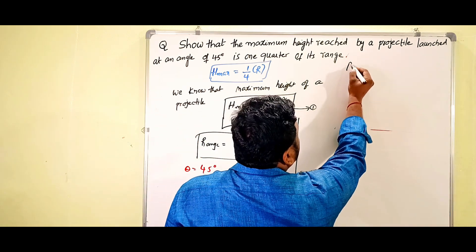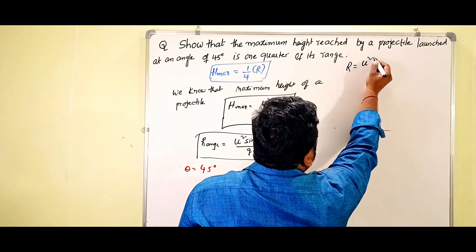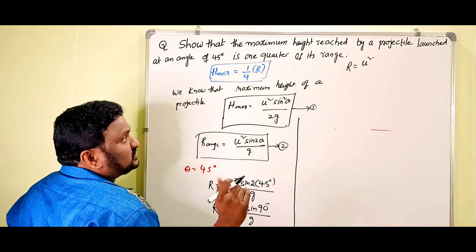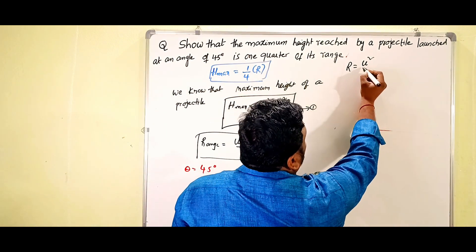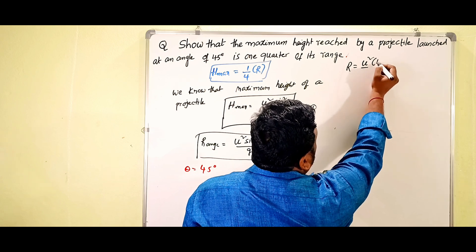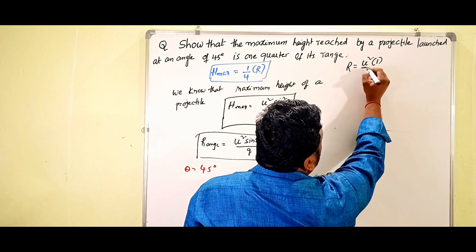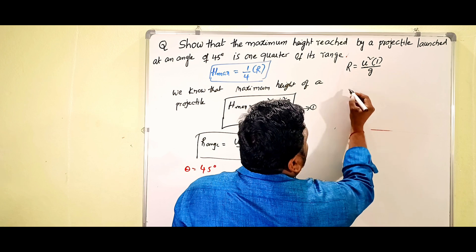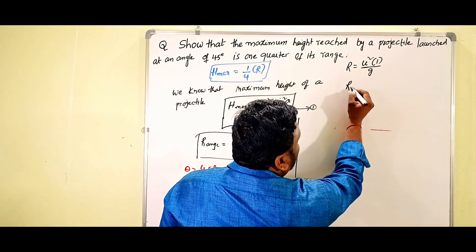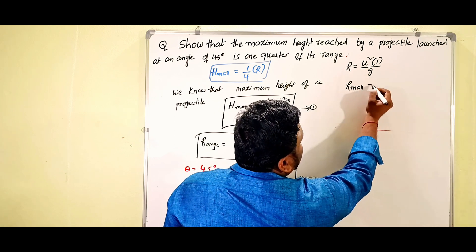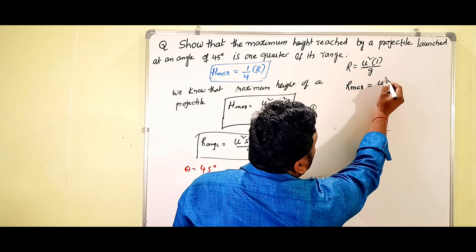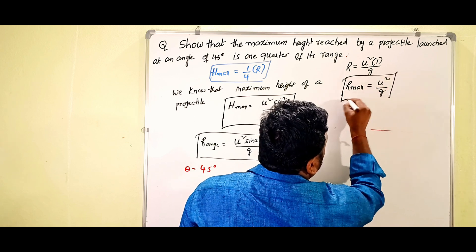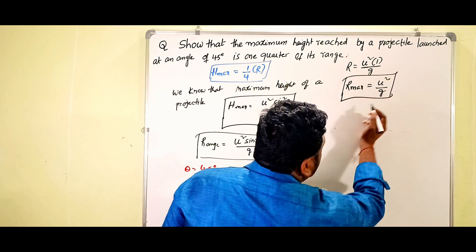Since sin(90°) = 1, we get R = u² × 1 / g, therefore R_maximum = u²/g. This is the maximum value of range — equation (3).